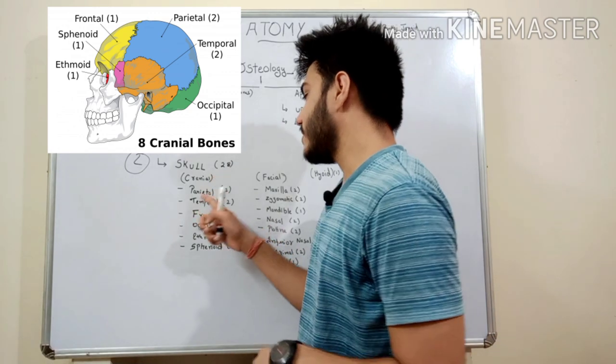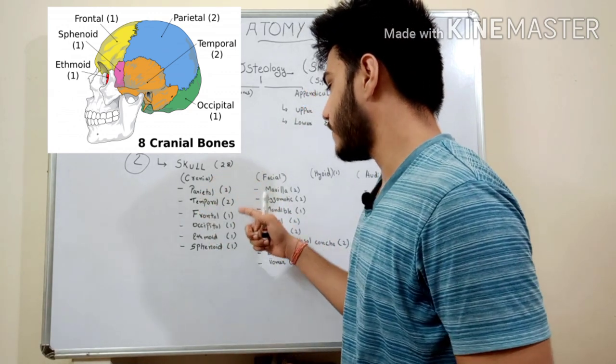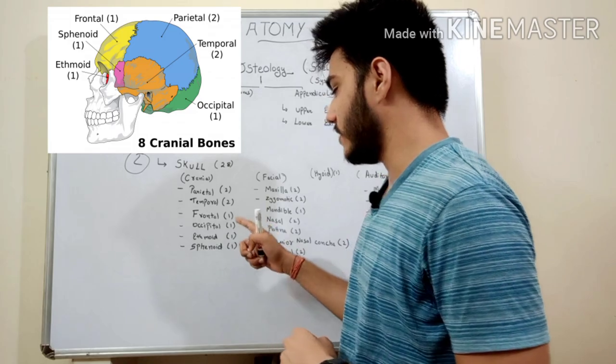As we can see, parietal consists of two bones, temporal two, frontal one, occipital one, ethmoid one, and sphenoid one.